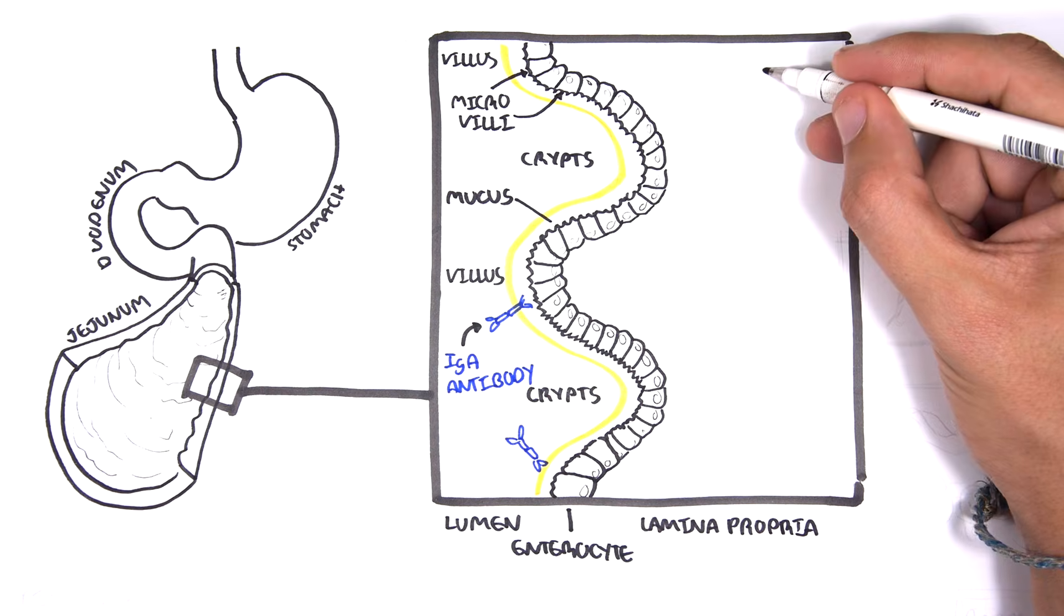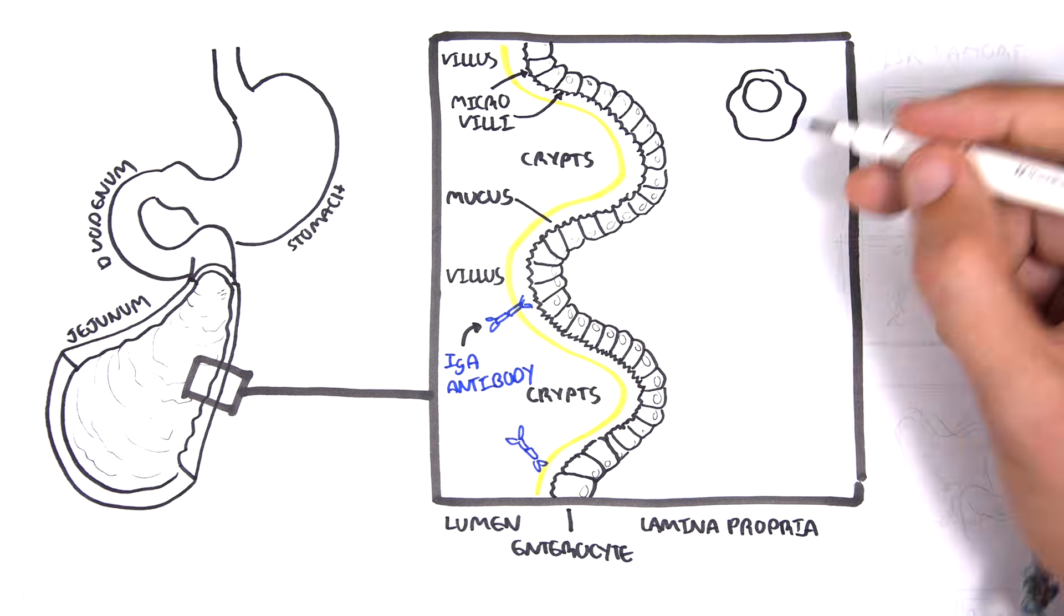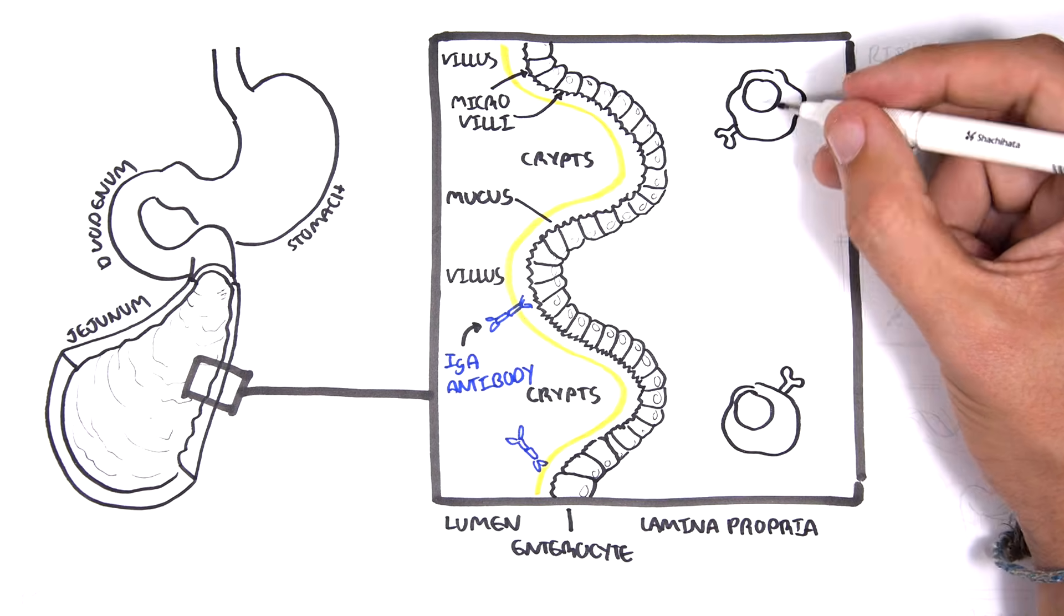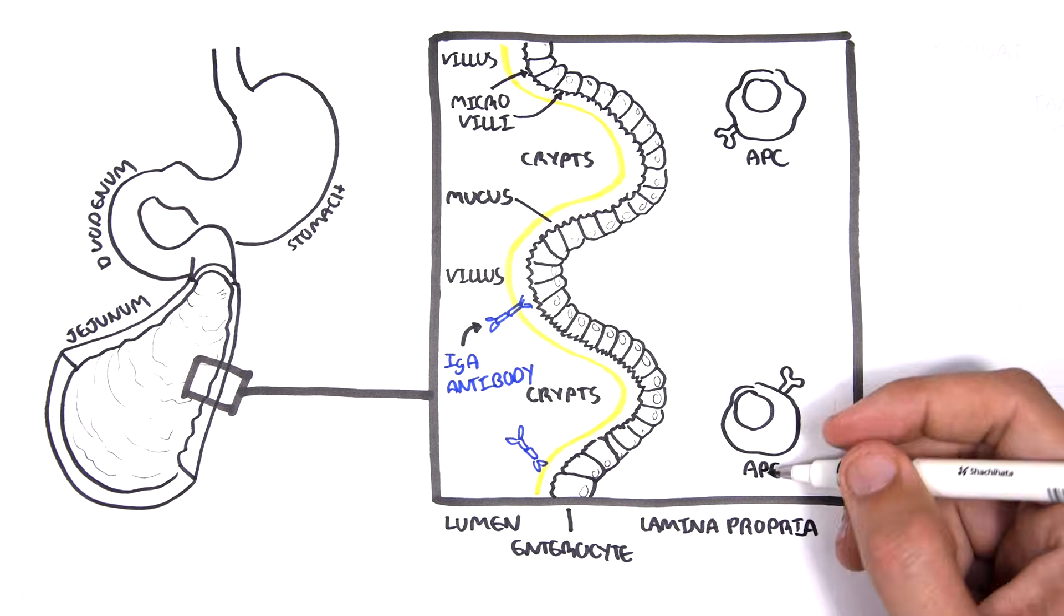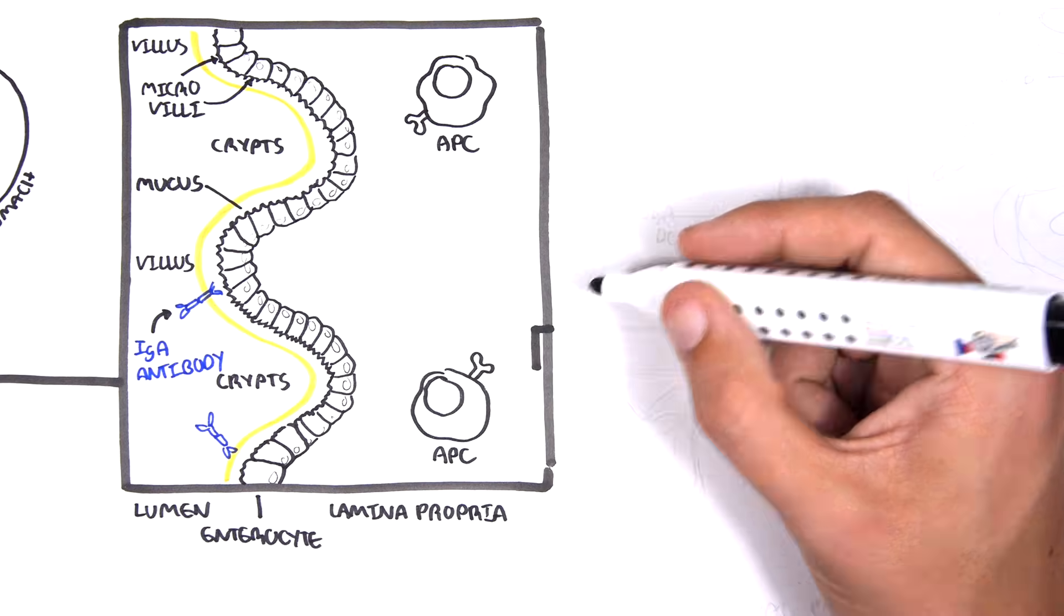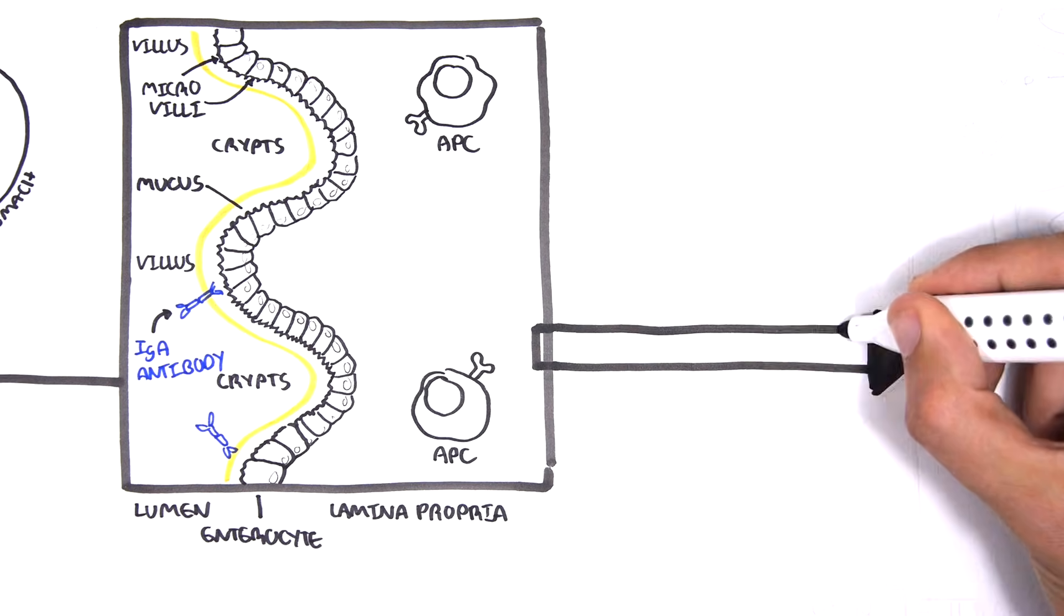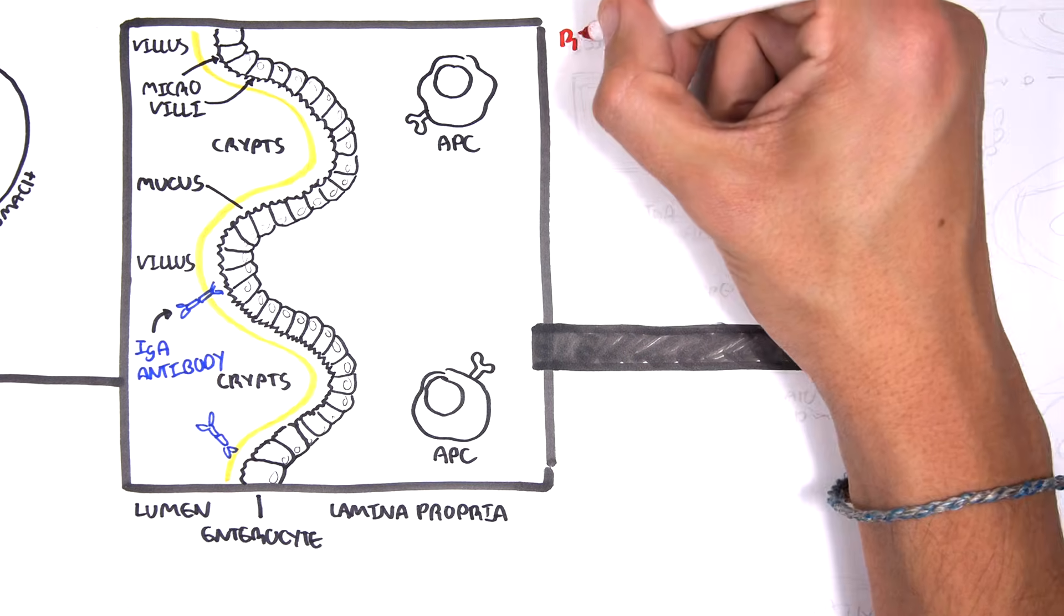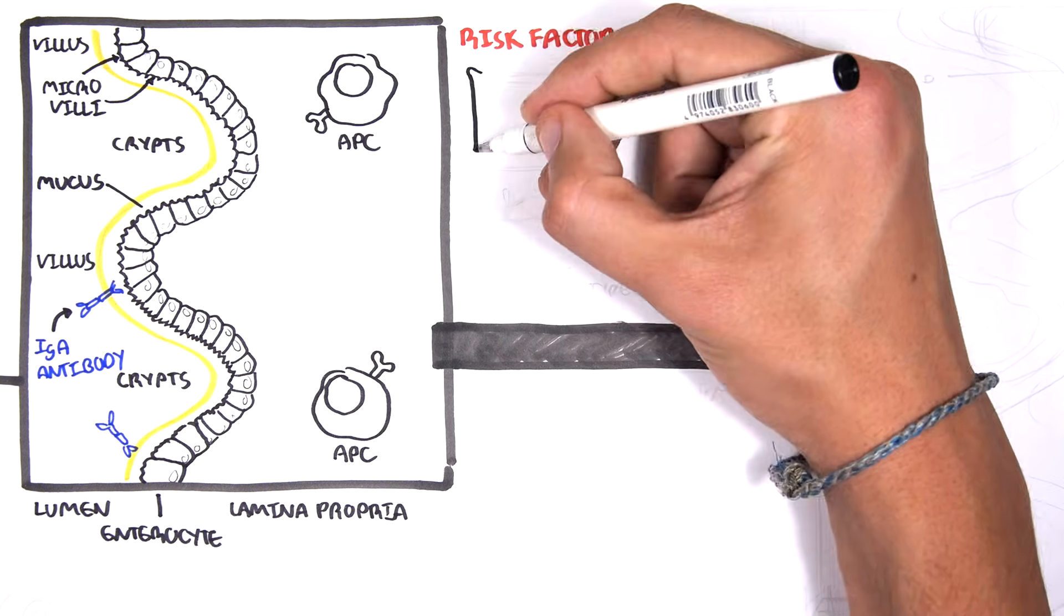Within the lamina propria, which is the level below the enterocytes, you can find some other cells, including antigen-presenting cells, which are important cells in the communication between the innate immune system and the adaptive immune system. Some people essentially have a predisposition to developing celiac disease, and these are risk factors.